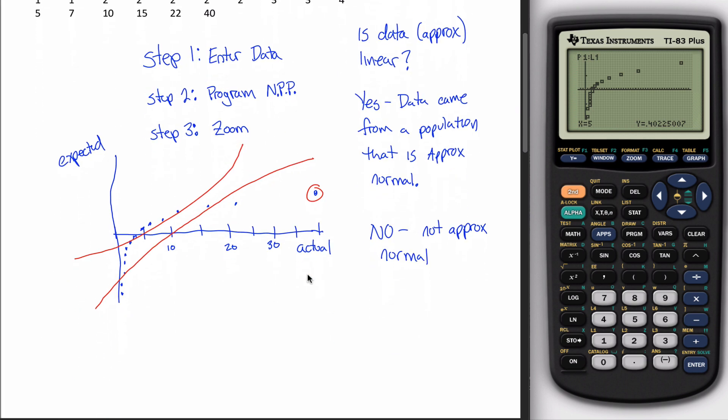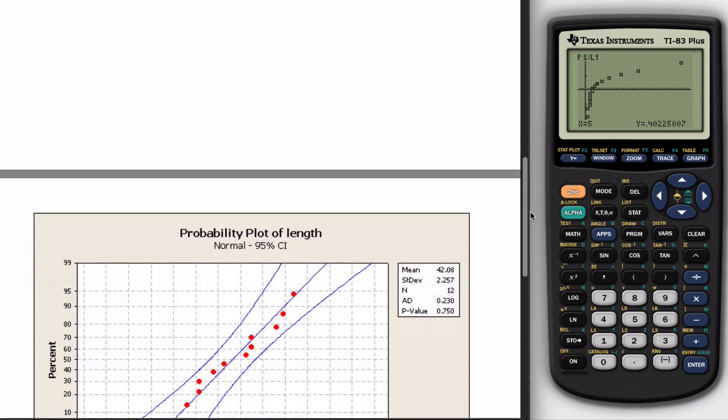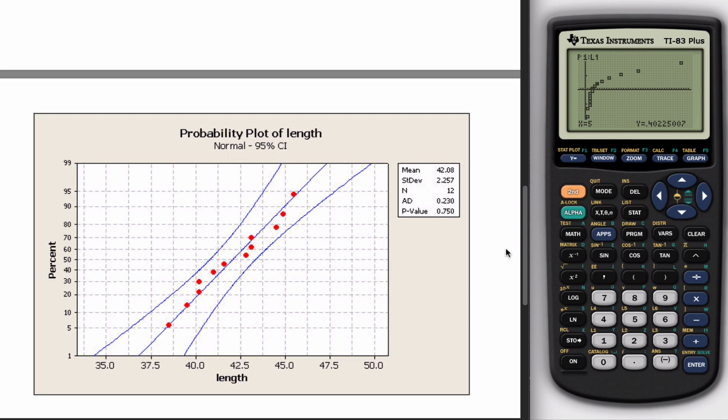To give you a couple more examples, what I did is I went online, I did a Google image search, and I found some normal probability plots. So here's one. Here's a normal probability plot from some software that's a little bit more advanced than what you have in your class. And note the bands. What the conclusion here would be is these red dots are approximately linear.